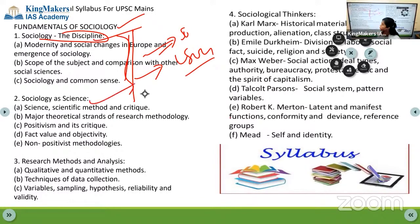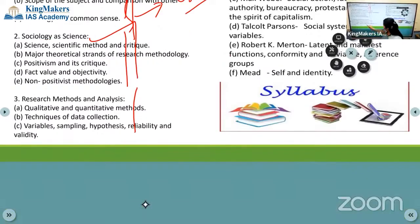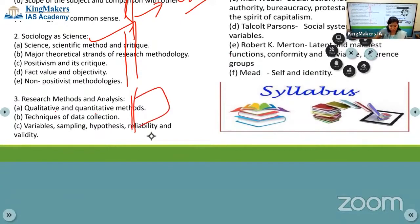Second is sociology as a science - whether it is science, arts, or commerce. We can examine this subject because when the subject is introduced, whether it is a science or arts or what, in which way we can treat it. Third is research method and analysis - the sampling method, quantitative method, like that - how sociology can be tested as a science or not. Very easy.